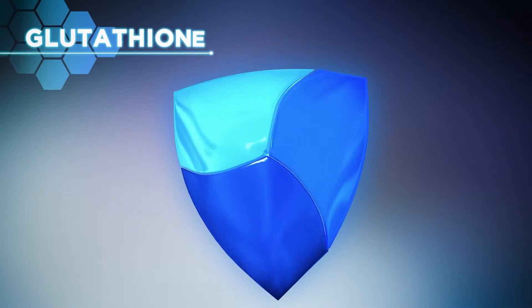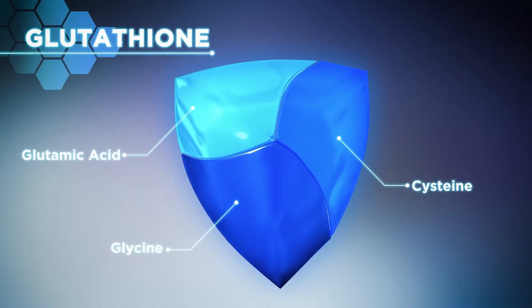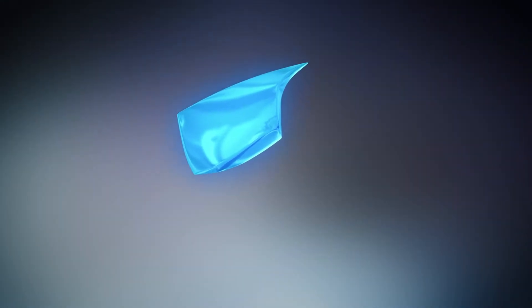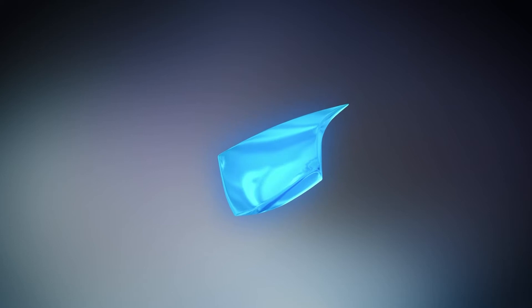Looking closely, glutathione is made up of three building blocks, but with age, the cellular levels of two of those building blocks, glycine and cysteine, often decrease, which can limit the ability of your cells to generate the glutathione they need.